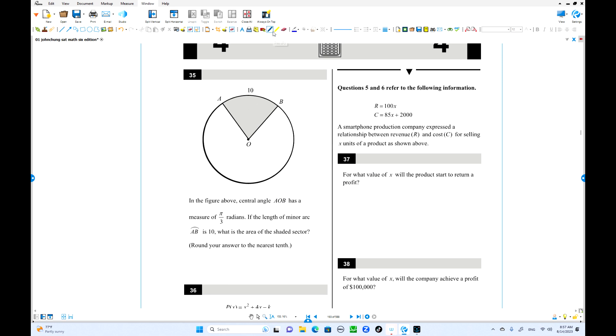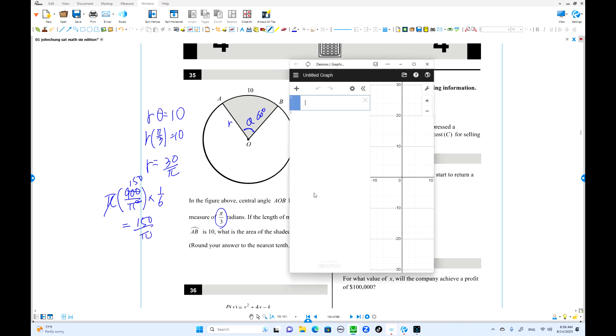Problem 35: Arc length r times theta equals 10, where theta is pi over 3. So r times pi over 3 equals 10, meaning r equals 30 over pi. The sector area is pi r squared times theta over 2 pi, which equals 1/6 of the circle. That's 900 over pi squared times 1/6. Pi cancels, giving 150 over pi, which equals approximately 47.7.